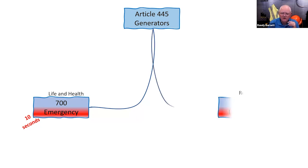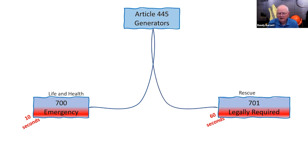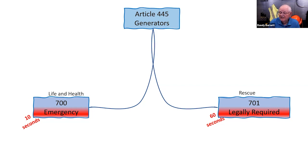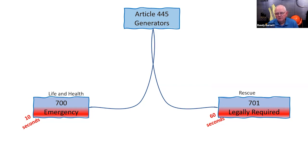We also have Article 701, for legally required standby systems. The terminology says they're less critical — not as important to human life and health. The code even uses the term 'rescue operations.' In Article 700, if the power goes off and we don't get emergency power back within 10 seconds, we have a danger of losing someone's life — or damage to health due to bad vapors, fumes, improper ventilation, smoke.